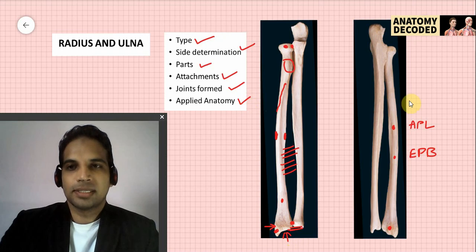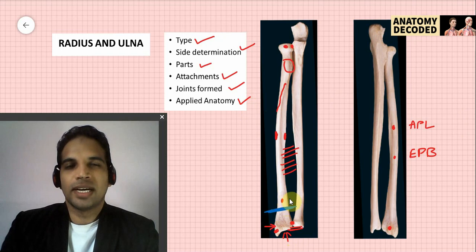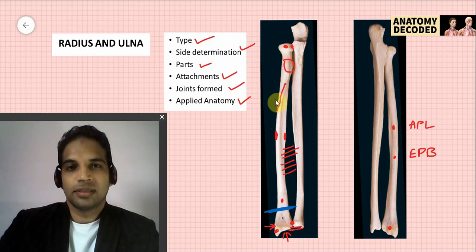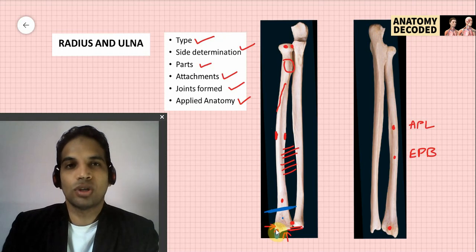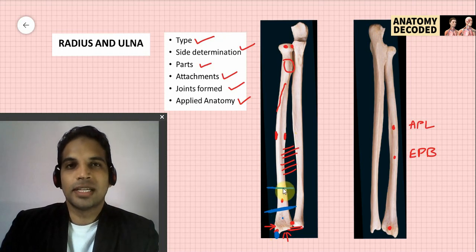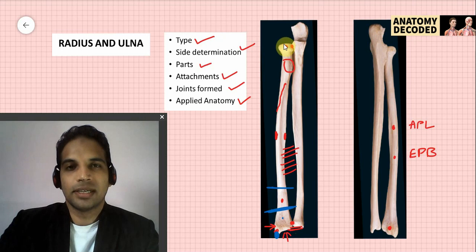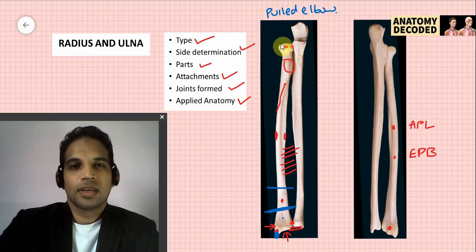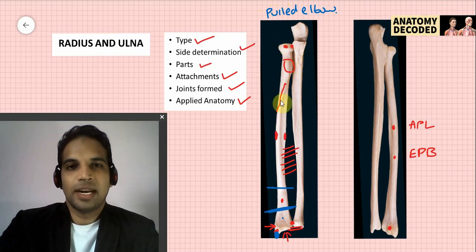Applied anatomy of the radius: Colles' fracture is fracture of the distal end of the radius where the distal fragment is displaced posteriorly. Smith's fracture is similar but the distal fragment is displaced anteriorly. Chauffeur's fracture is fracture of the styloid process of the radius. Galeazzi fracture is fracture of the distal third of the radius with dislocation of the distal radioulnar joint. Pulled elbow involves dislocation of the head of the radius from the capitulum.